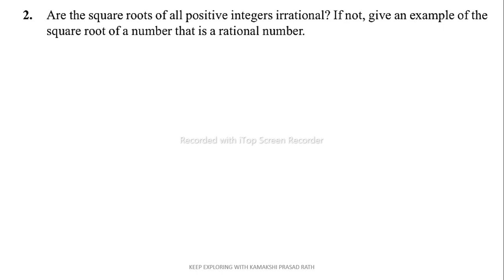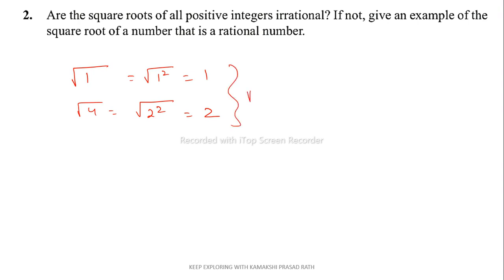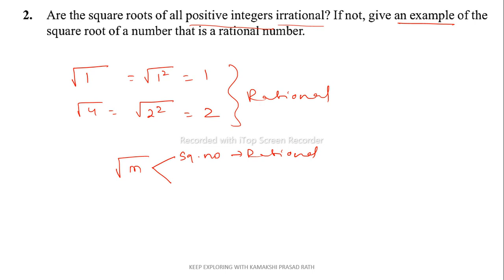The next question: are the square roots of all positive integers irrational? If not, give an example of the square root of a number that is a rational number. Let us choose a number whose square root gives a rational number. For example, √1 = 1, and √4 = 2 — both are rational numbers. So the square roots of all positive integers are not irrational. If m is a perfect square number it will be rational, and if m is a non-square number it will be irrational.